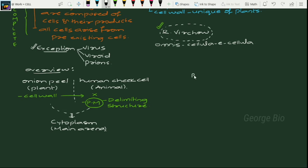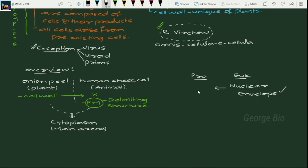Now comparing prokaryotes and eukaryotes: in prokaryotes, there is no nucleus and no nuclear envelope. The nuclear envelope is present in eukaryotes and absent in prokaryotes. Not only this — membrane-bound cell organelles are also absent in prokaryotes.